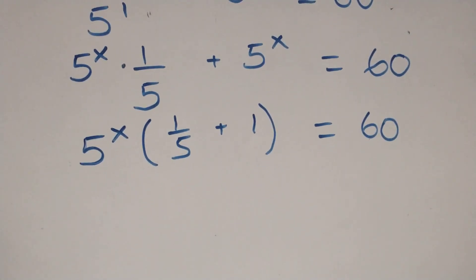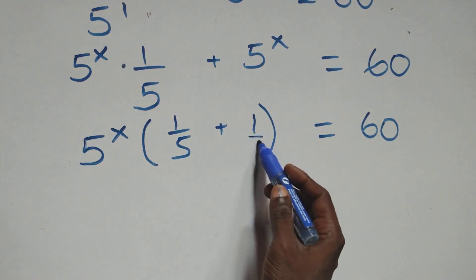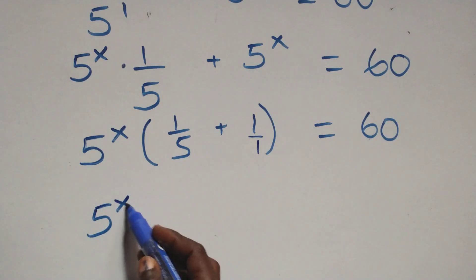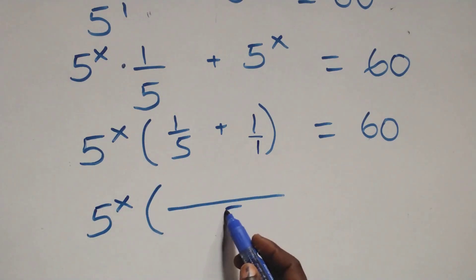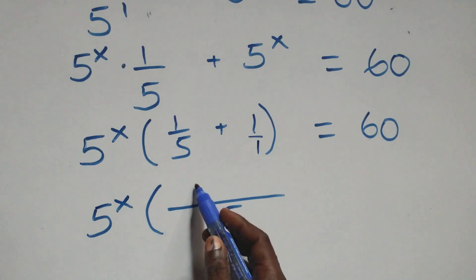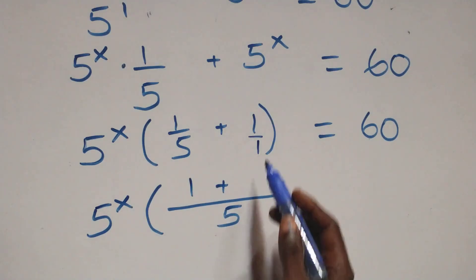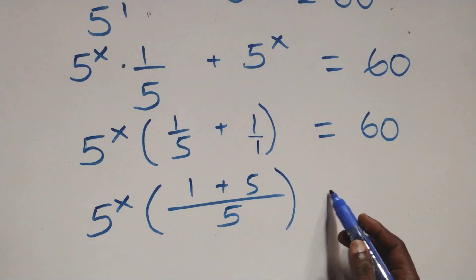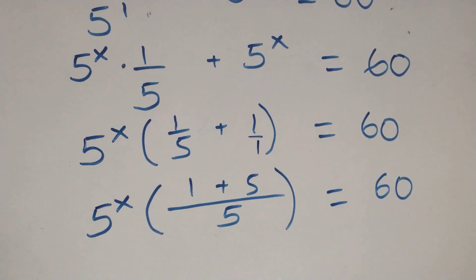Next step: we bring this together as one fraction. We have 5 raised to power x into bracket — the LCD is 5, so 5 goes into 5 once (1 times 1 = 1), plus 1 goes into 5 giving 5 (5 times 1 = 5) — all equals 60.